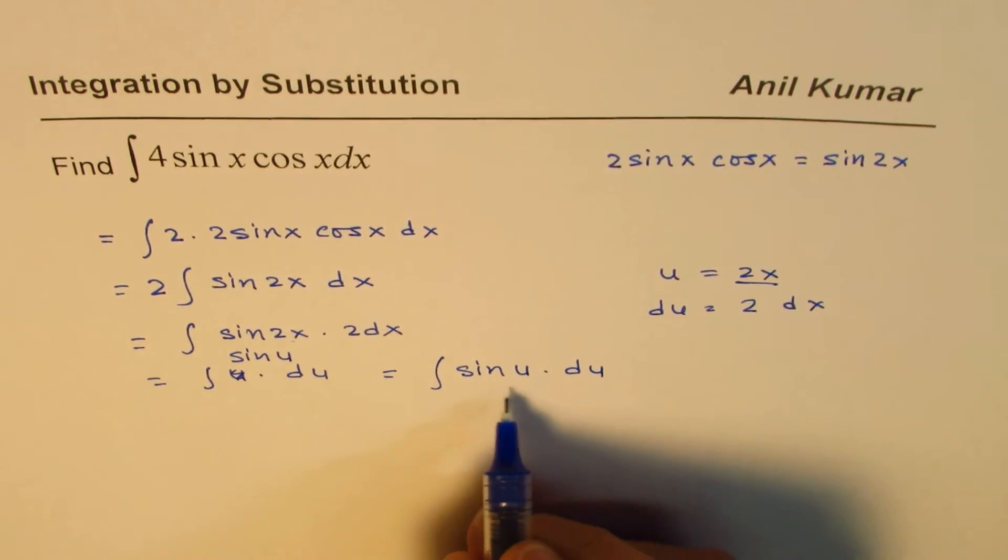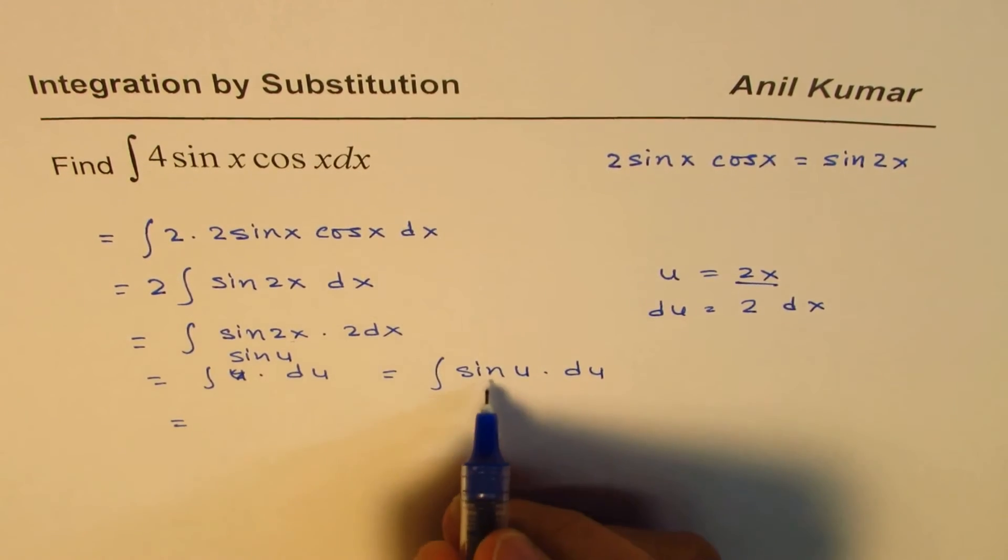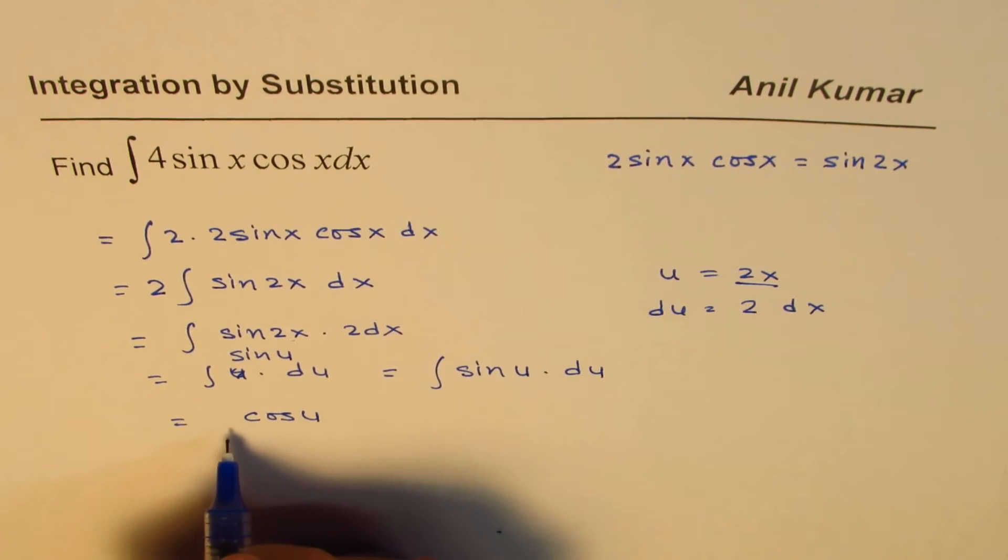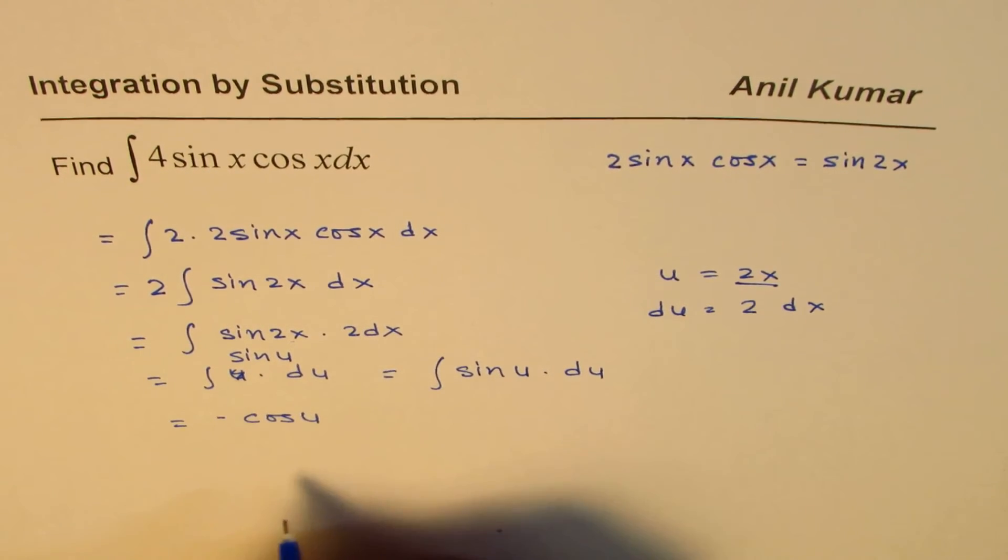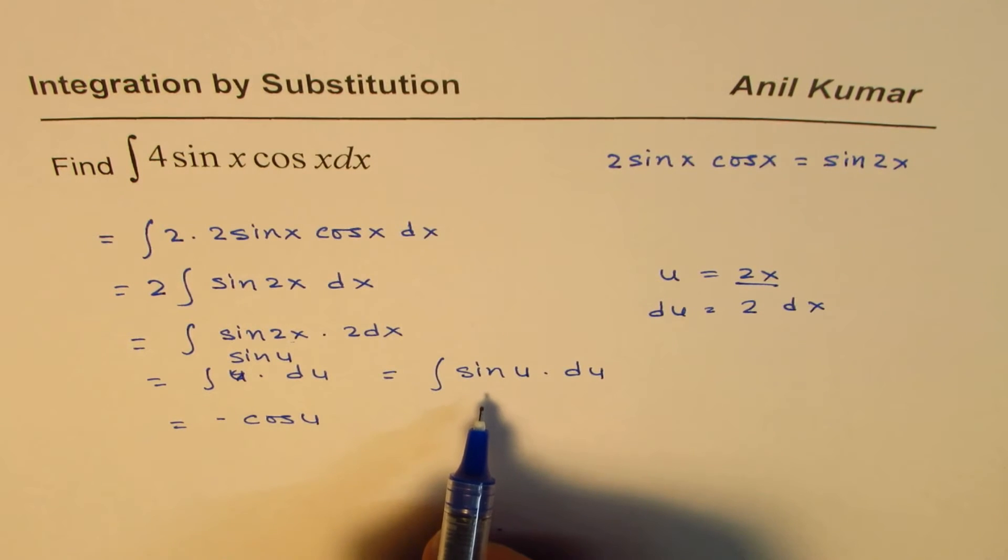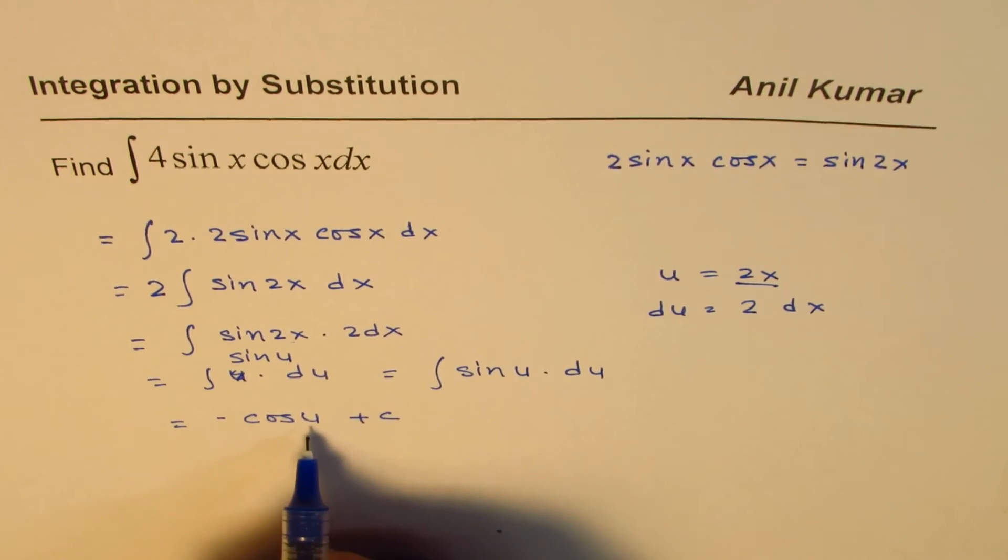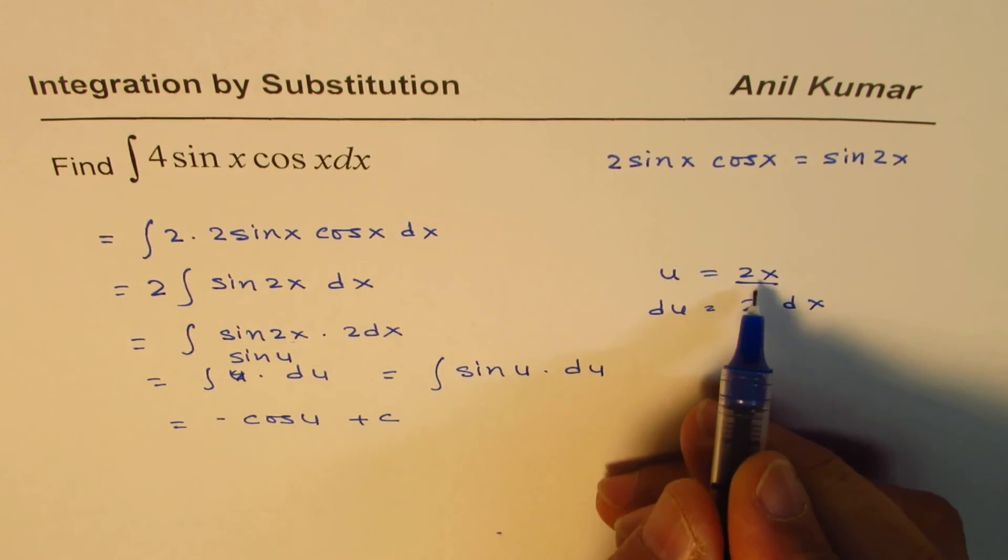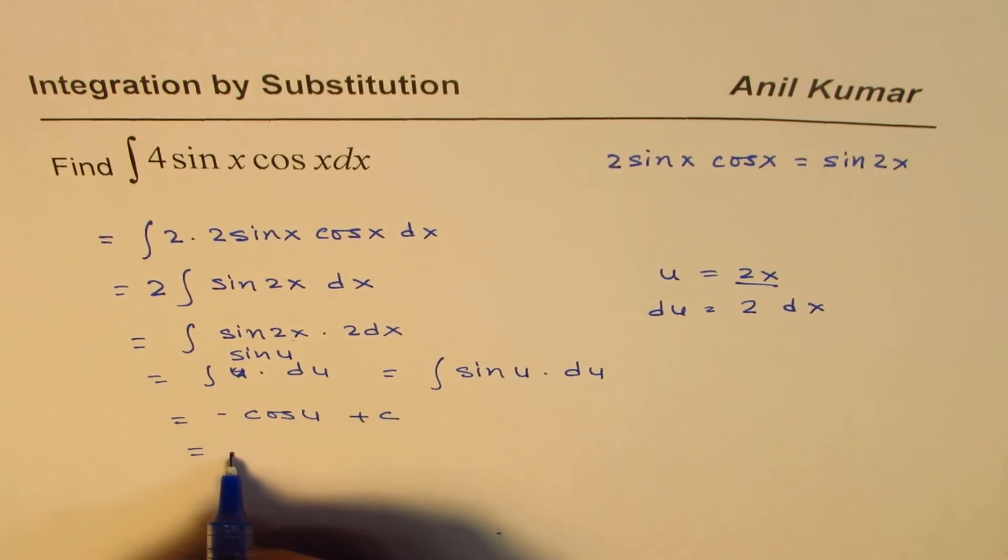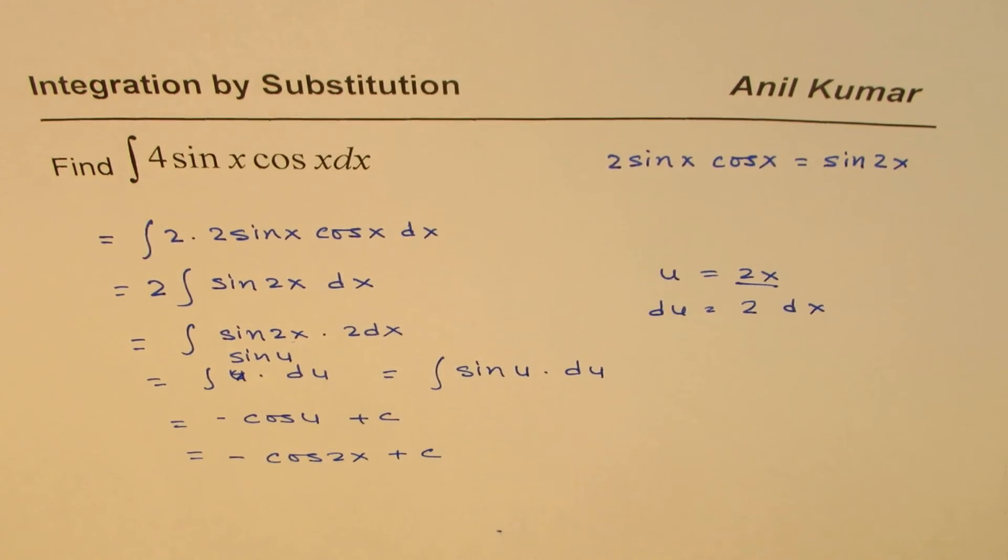Now, the integral of sin(u) is −cos(u) with a negative sign. The derivative is positive, but the integral of sine is negative. So that is what you get, plus c. And now you can replace u with 2x. So what you get here is −cos(2x) + c. That is how you solve such questions.